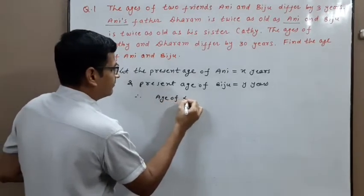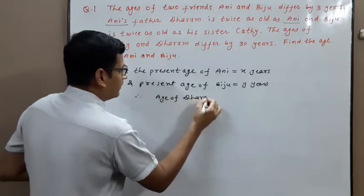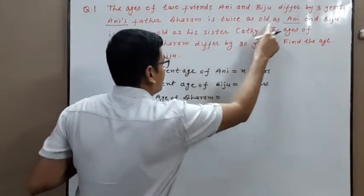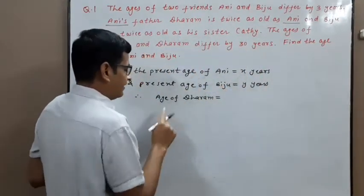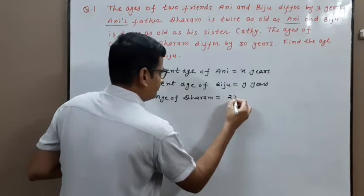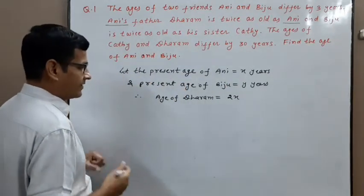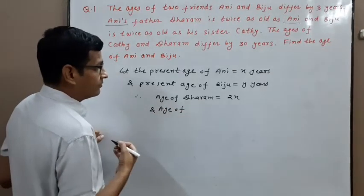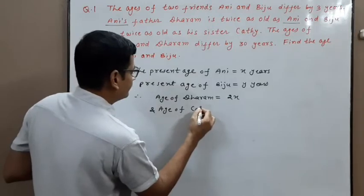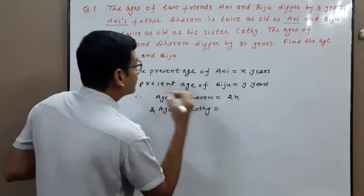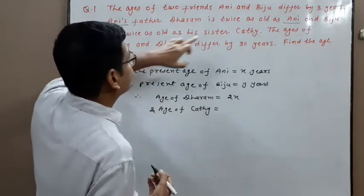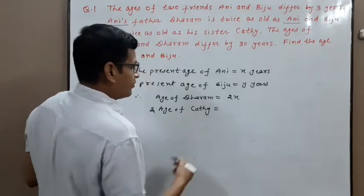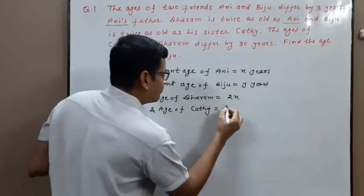Therefore, the age of Dharam — Ani's father Dharam is twice as old as Ani — so if age of Ani is X, then age of Dharam is 2X. And the age of Cathy: Biju is twice as old as sister Cathy, so if age of Biju is Y, then age of Cathy is Y/2.